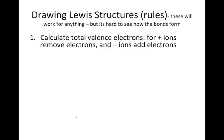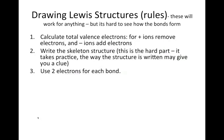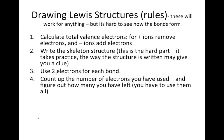Here they are. The first one is you calculate the total valence electrons. If you have positively charged ions, you remove that number of electrons, and for negative ions, you add the same number of electrons. Then you write the skeleton structure. This is the hard part. It takes practice, and the way the structure is written may give you a clue, or it may not. You really have to practice at this. You use two electrons for each bond, and then you count up the number of electrons that you've used, that is, how many you've used in the bonds, and then you figure out how many you've got left.